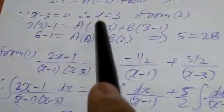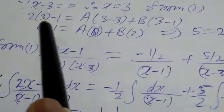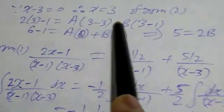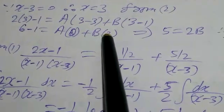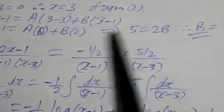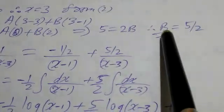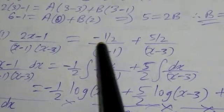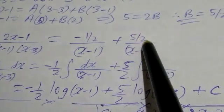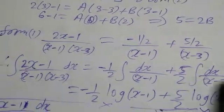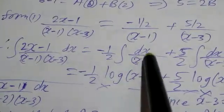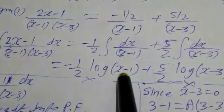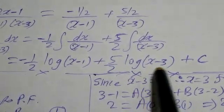Since (x minus 3) is equal to 0, therefore x is equal to 3. From equation 2: 2(3) minus 1 equals A into (3 minus 3) plus B into (3 minus 1), so 5 equals A into 0 plus B into 2, giving 5 equals 2B. Therefore B is 5 upon 2. Applying integration: the answer is minus (1/2) log(x minus 1) plus (5/2) log(x minus 3) plus C.